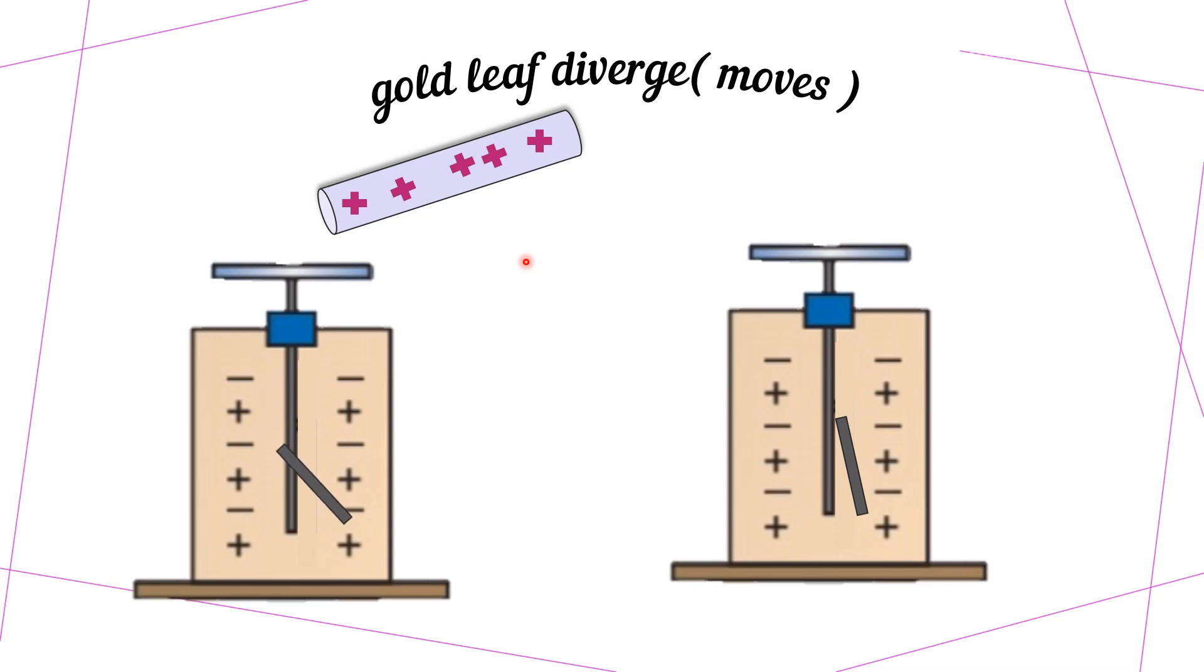When you bring a negatively charged rod close to the electroscope, the gold leaf will diverge also.